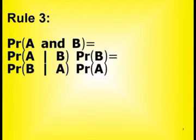Rule 3: The probability of A and B is equal to the probability of A times the probability of B given A, and it's also equal to the probability of B times the probability of A given B. And I will not illustrate that before later. And that's it.